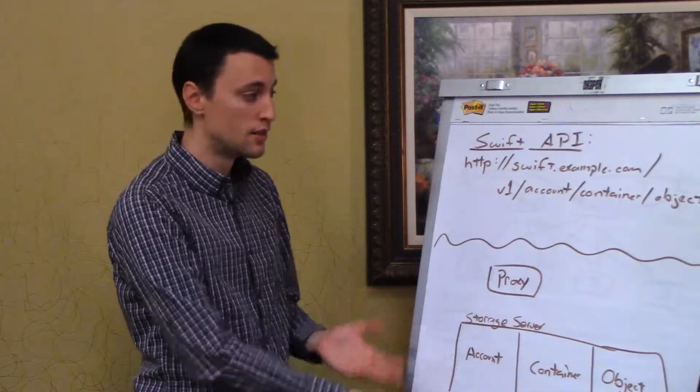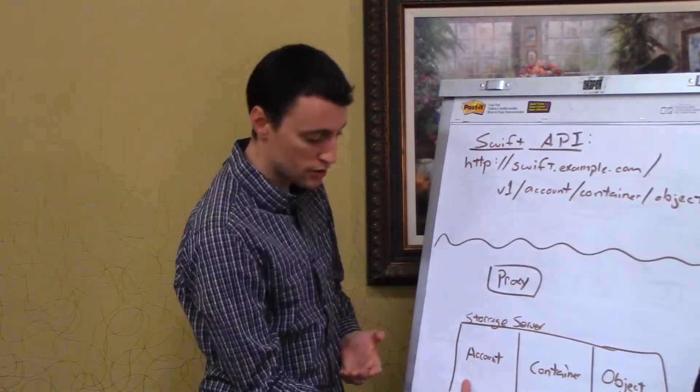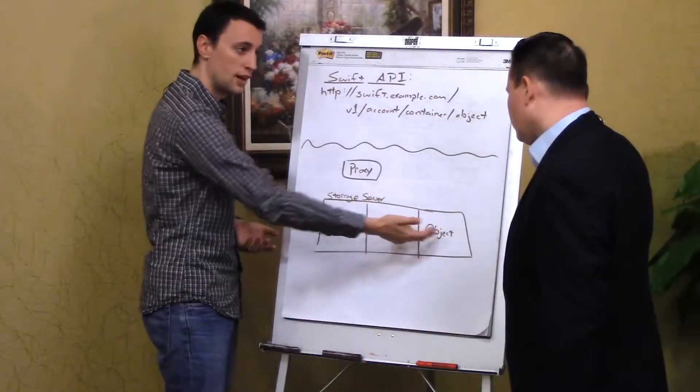So the way that bakes down into the actual logical components of Swift itself is that you've basically got two high-level pieces of Swift. You've got a proxy server and you've got the storage server. The proxy server is responsible for all of the client-facing communication in the cluster. All client requests come to the proxy server, and then the proxy server implements most of the Swift API, and then it coordinates all the communication with the storage servers.